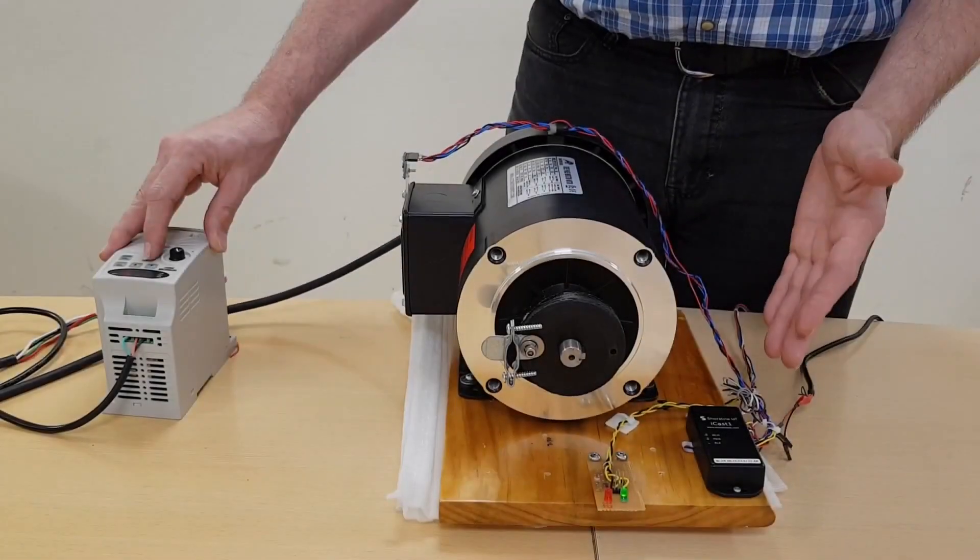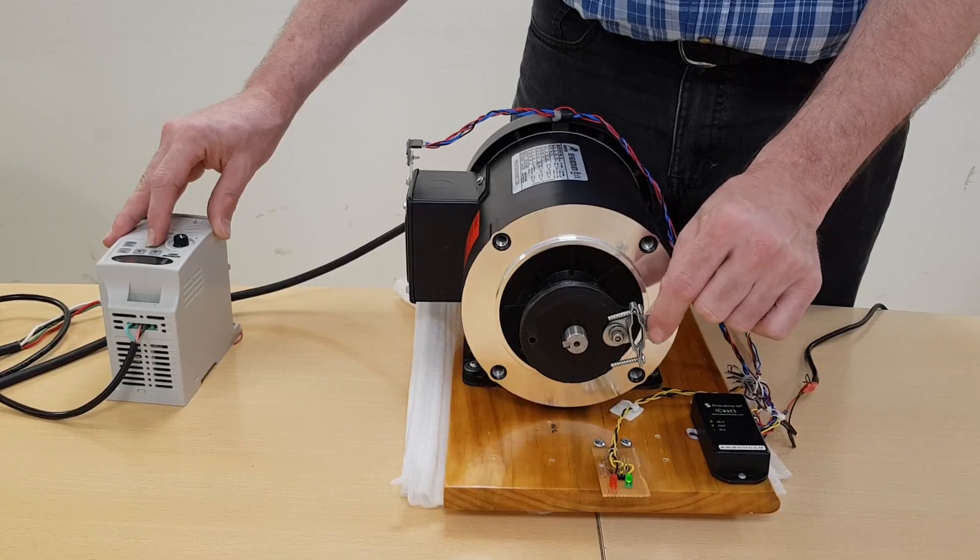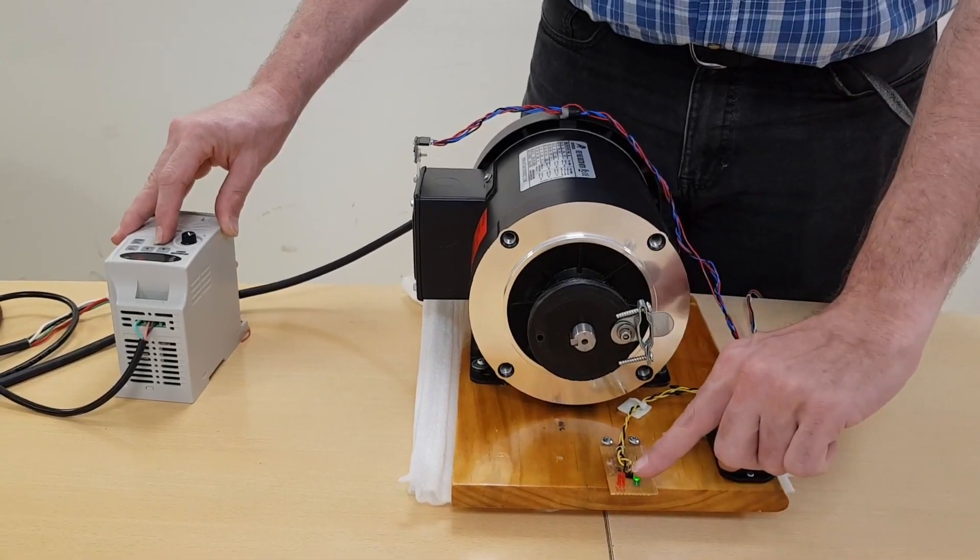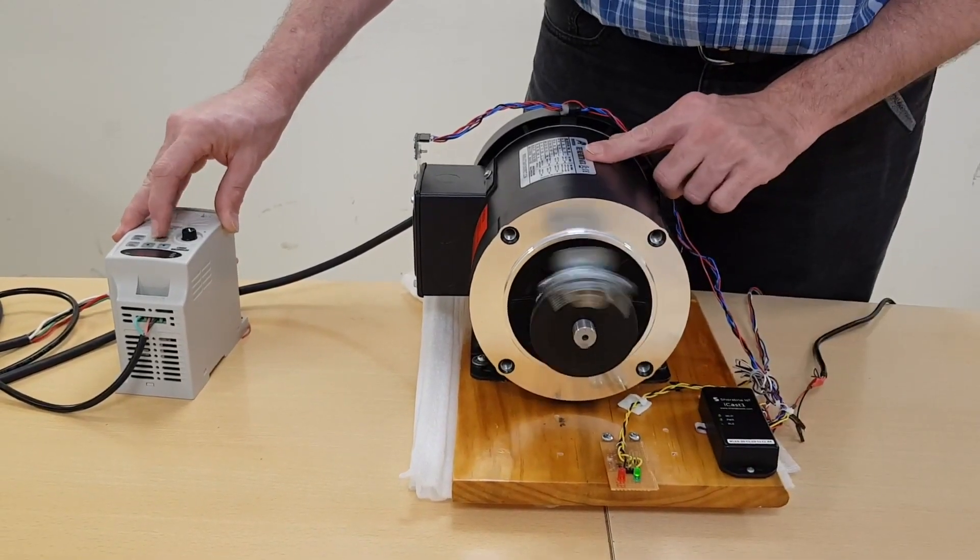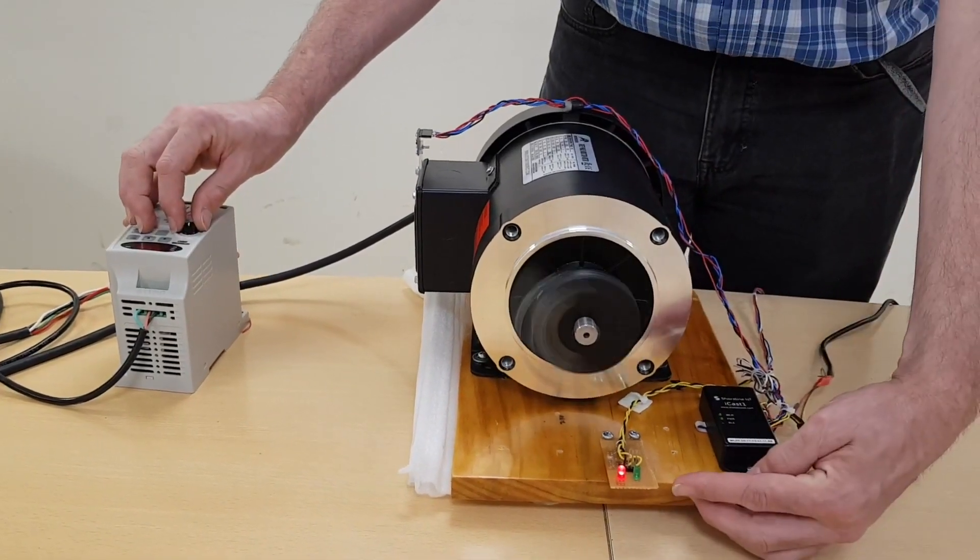So when the motor has a fault, such as vibration, which we're simulating here with an offset weight on the shaft, this red LED will set. So I'll start the motor. Now you see that the red fault LED has set.